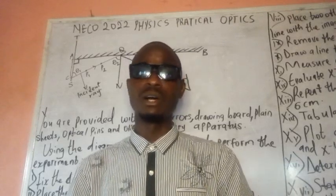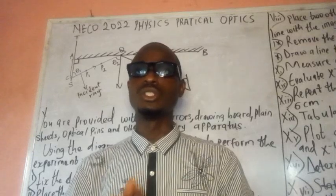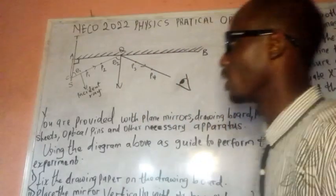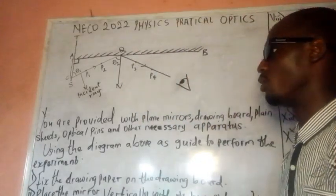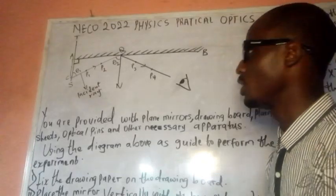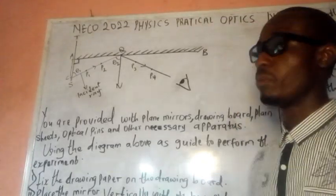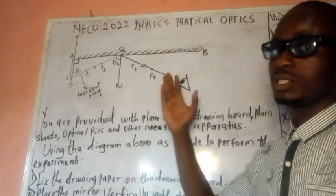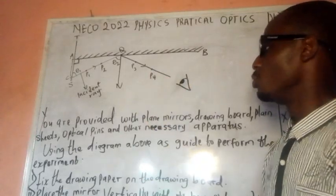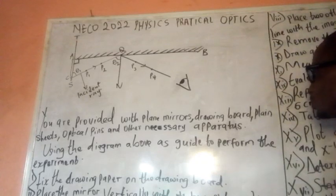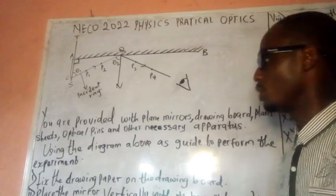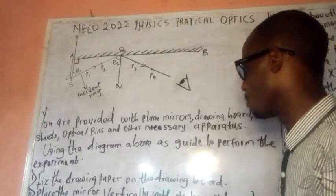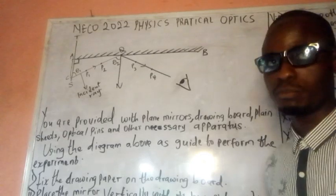We want to look at the physics practical for NECO 2022, specifically the optics section. Now in this video, let's go to our question. You are provided with a plane mirror, drawing board, plane sheets, optical pins, and other necessary materials. Use the diagram as a guide to perform the experiment.